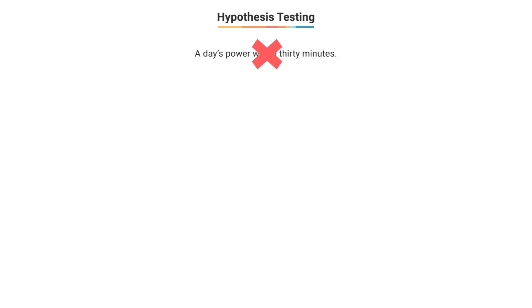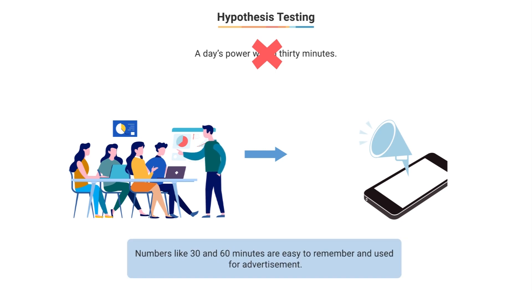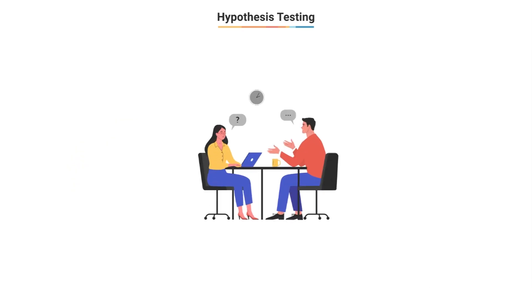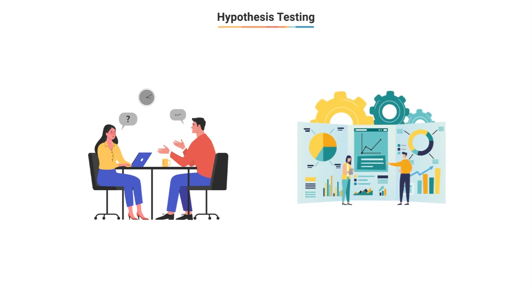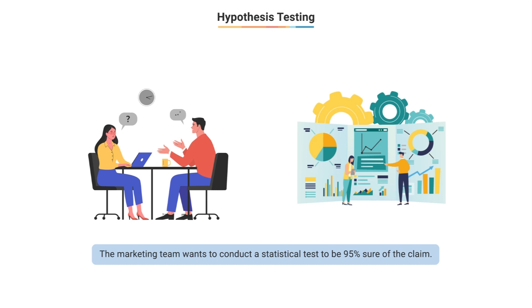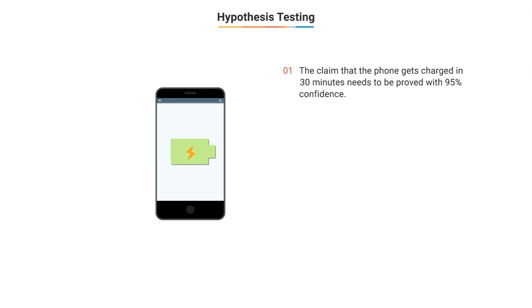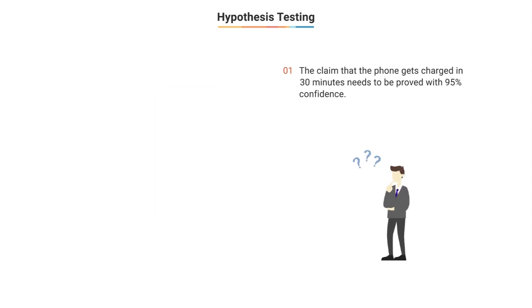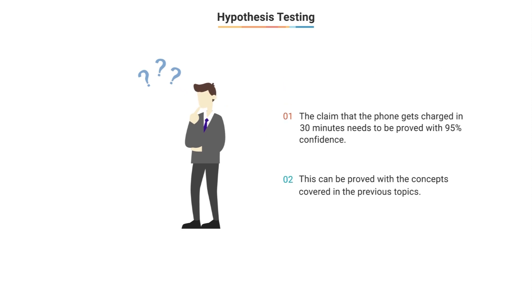The marketing team would not give up that easily, since in order to advertise we usually want to use numbers that are easy to remember, such as 30 minutes or 60 minutes. The marketing lead has approached you and asked you to conduct a proper statistical analysis to quantify the validity of the slogan and find out how confident we are of the slogan being valid. We can acknowledge the validity of the slogan if we are able to prove with 95% confidence that the Max phones can be fully charged within 30 minutes.